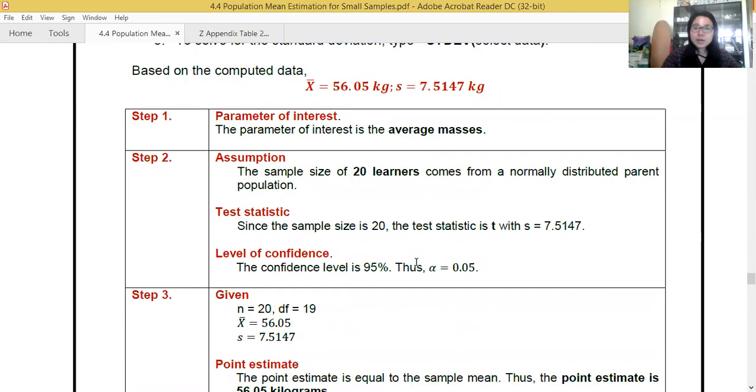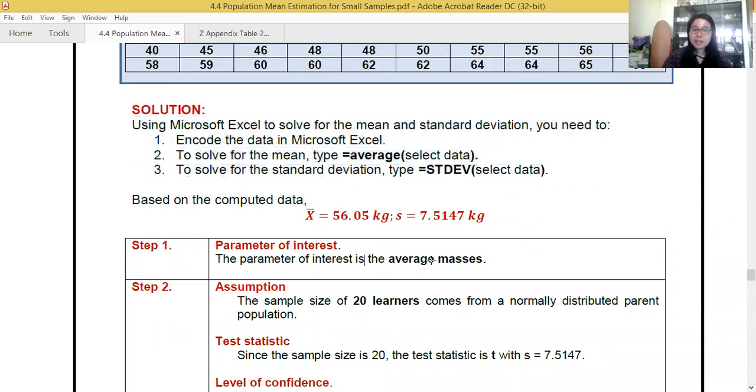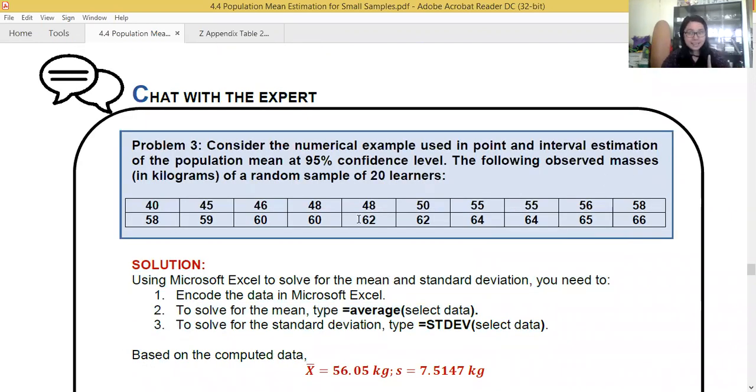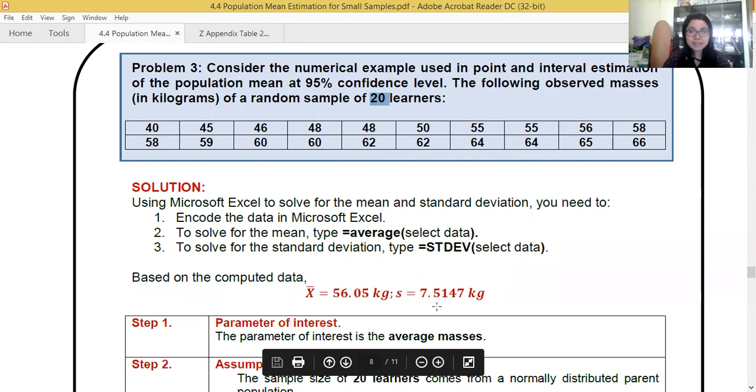So with this one, we have now our given data. We first ask, what's the topic all about? It's about the average masses or the mean masses. Again, when we estimate, we must start with the mean or the average in the parameter of interest. Next, assumption. There are 20 learners. So we say a sample of 20 learners comes from a normally distributed parent population. And since it is a small sample size, our test statistic is T-test. With a value of S, 7.5147 kilograms.